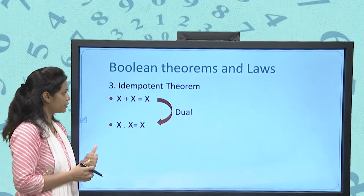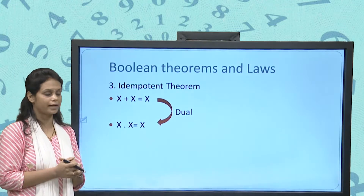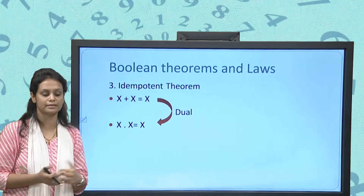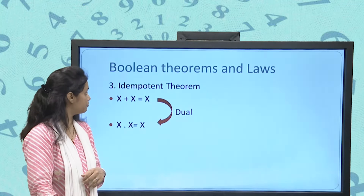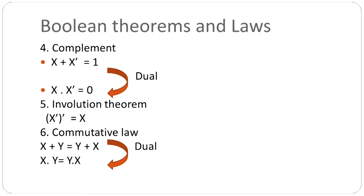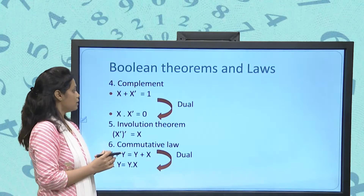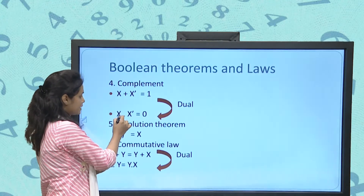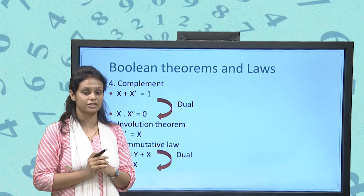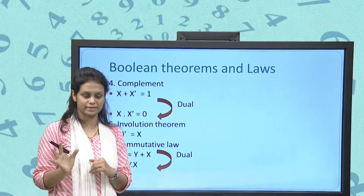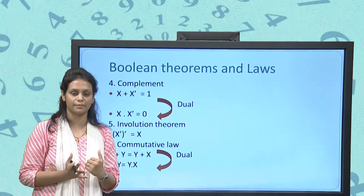This is the idempotent law: x + x = x and x · x = x, just as A ∪ A = A and A ∩ A = A in set theory. For complement: x + x' = 1 (the highest element), and x · x' = 0 (the smallest element), since there is no common element between x and its complement.